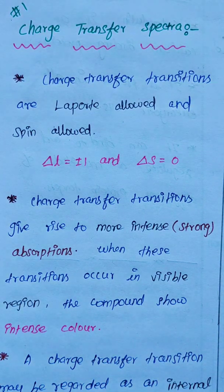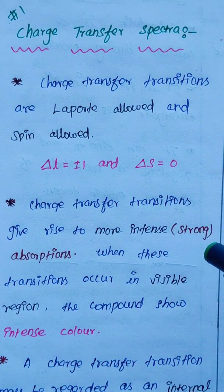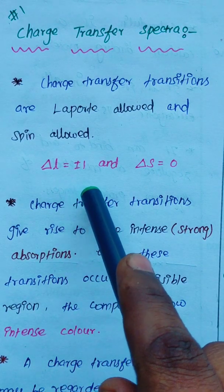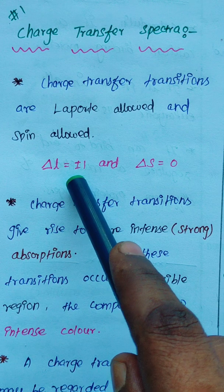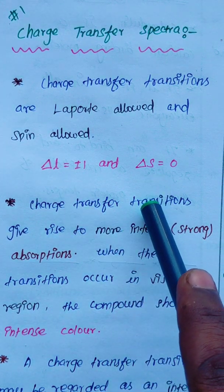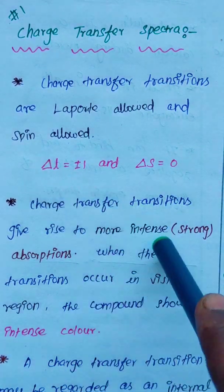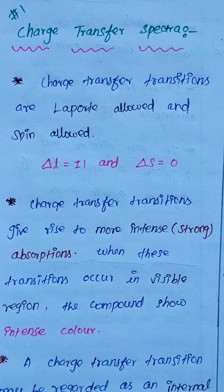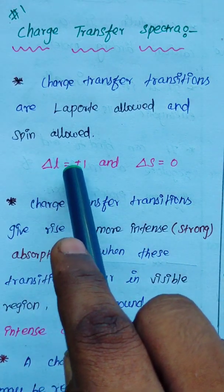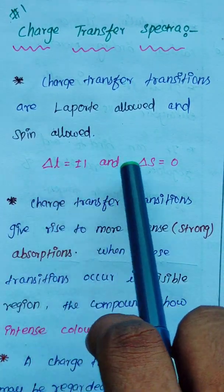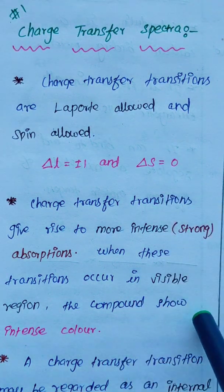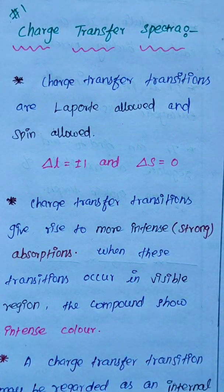Charge transfer spectra. Charge transfer transitions are Laporte allowed and spin allowed. Laporte allowed means the delta L value is plus or minus 1 or 0. Spin allowed means the spin multiplicity change is zero. These are the two allowed transition conditions we have already discussed.